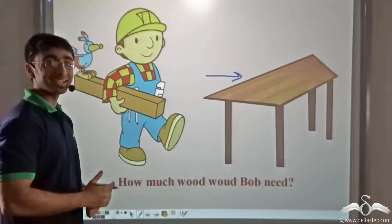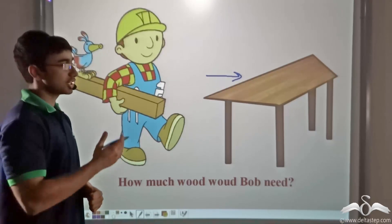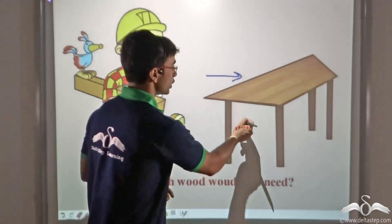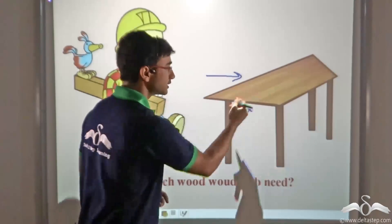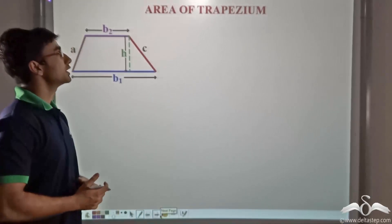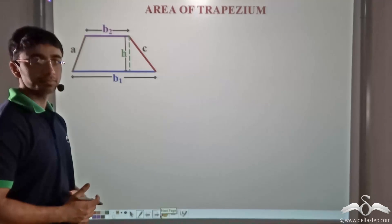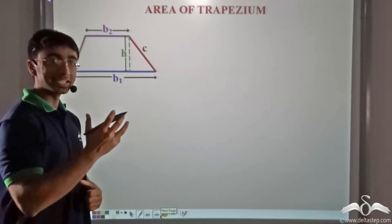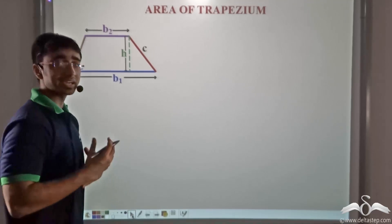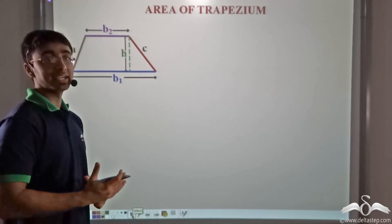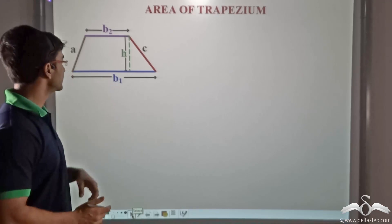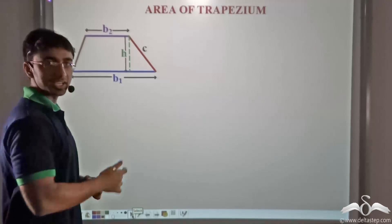Now Bob was a highly skilled carpenter. Let us see how Bob used his knowledge to construct a trapezium table. In order to do so, he would have to know the area of the trapezium. There is a very simple activity by which we can find out the area. Firstly, we consider the trapezium as you can see.